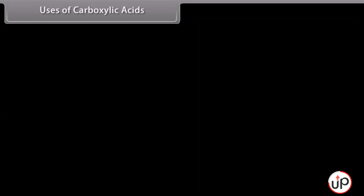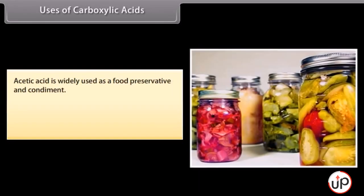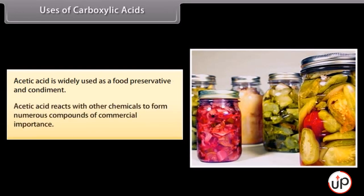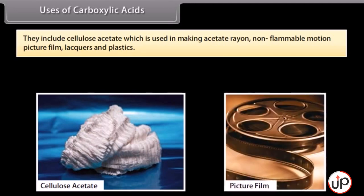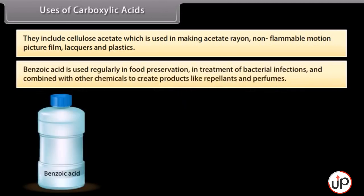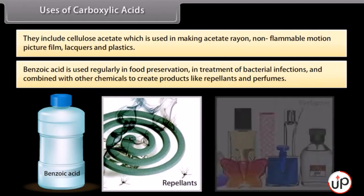Uses of carboxylic acids: acetic acid is widely used as a food preservative and condiment. Acetic acid reacts with other chemicals to form numerous compounds of commercial importance, including cellulose acetate used in making acetate rayon, non-flammable motion picture film, lacquers and plastics. Benzoic acid is used regularly in food preservation, in treatment of bacterial infections, and combined with other chemicals to create products like repellents and perfumes.